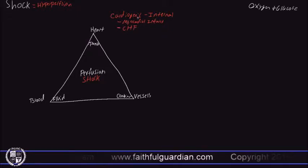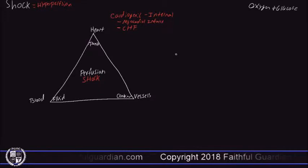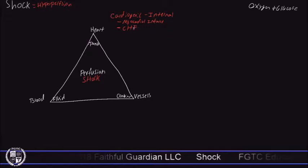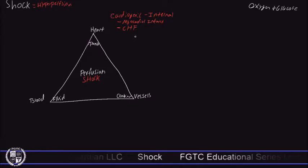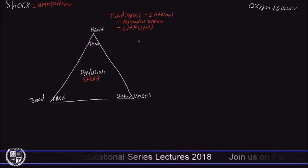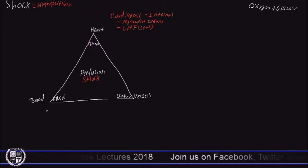In a myocardial infarction, the heart muscle itself is starting to die. In congestive heart failure resulting in inadequate oxygen and nutrient delivery, it is likely due to left-sided heart failure. What happens is fluid backs up into the lungs, which hinders the ability to get oxygen to the cells.